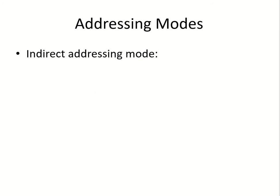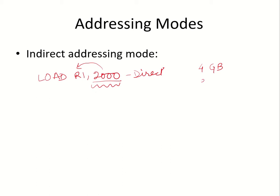In the direct addressing mode, we saw that we were specifying the memory address in the instruction itself. It was like this: load r1 2000 — it meant that whatever was available at memory address 2000 is to be brought into r1. This was the direct addressing mode. If I am using this mode, the number of bits used to specify the memory address will depend upon the size of the memory. For a 4 gigabyte memory, this requires 32 bits to specify the address.